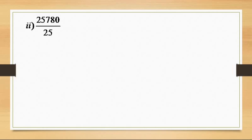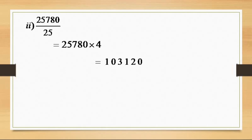Next example for division by 25: 25780 divided by 25. We multiply 25780 by 4 to get 103120. From right to left, we take two digits and place the decimal, giving us 1031.20 as the answer.